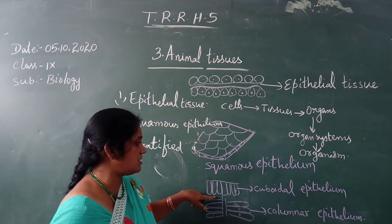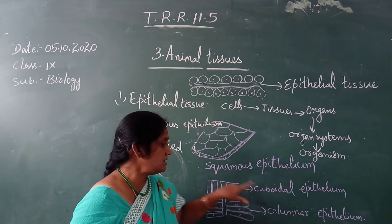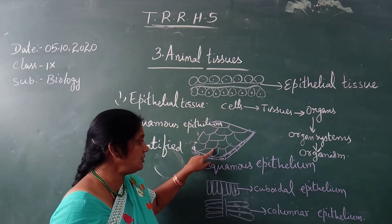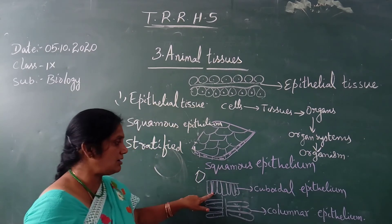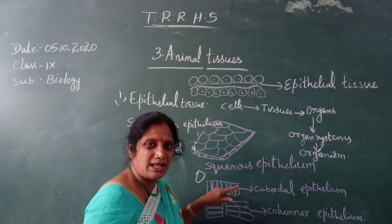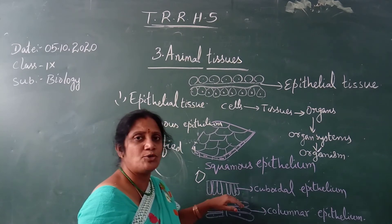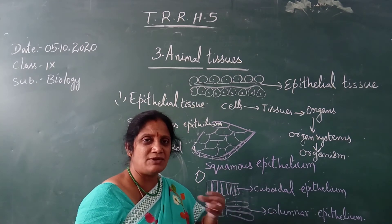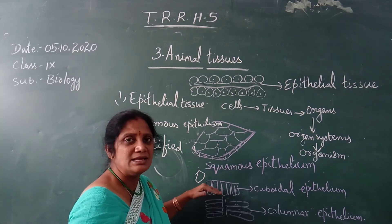Another type is the cuboidal epithelial tissue. Squamous epithelial cells are very flat, while cuboidal epithelial cells have a cube-like shape. This type of epithelial tissue can be observed in glands such as salivary glands, gastric glands, and intestinal glands. It helps in the secretion process — for example, salivary glands secrete saliva.